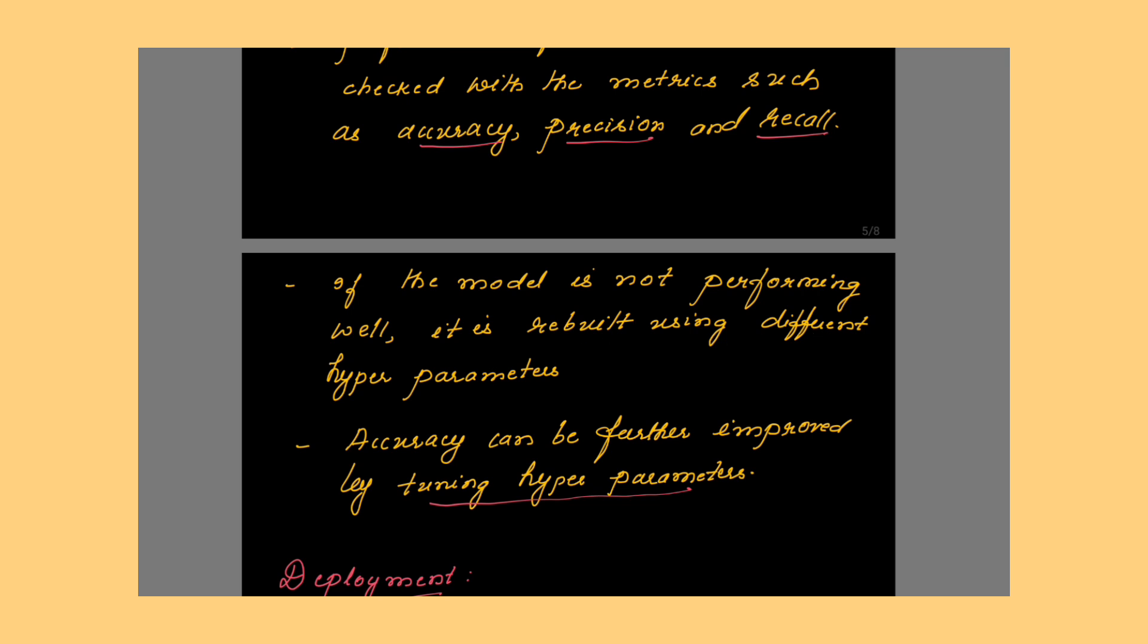If the model is not performing well, it is rebuilt using different hyperparameters. Accuracy can further be improved by tuning hyperparameters. What are hyperparameters? Some parameters with respect to the algorithm need to be set before you start training the model. For example, like when you start driving a car, you set some things like seat belt, mirrors and all. Same way here also for the algorithm, you are going to set some parameters. Those parameters are called hyperparameters.